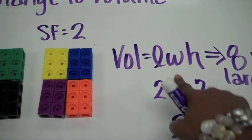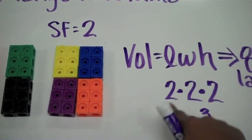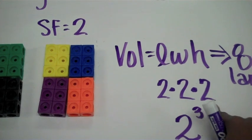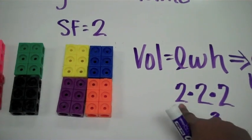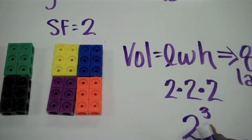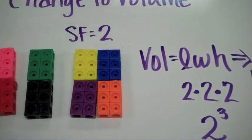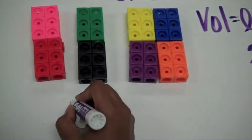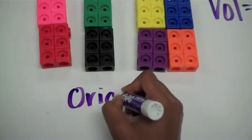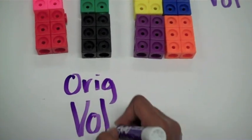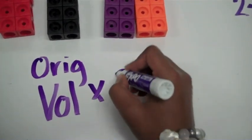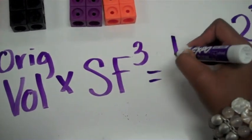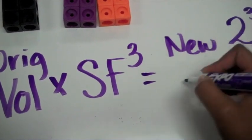Think about it, volume is a three dimensional measurement. All three measurements increased or doubled. And so that's our scale factor to the third power with this three dimensional measurement. So if I wanted to figure out a formula for proportional change to volume, I would say I take my original volume multiplied by my scale factor cubed to get my new volume.